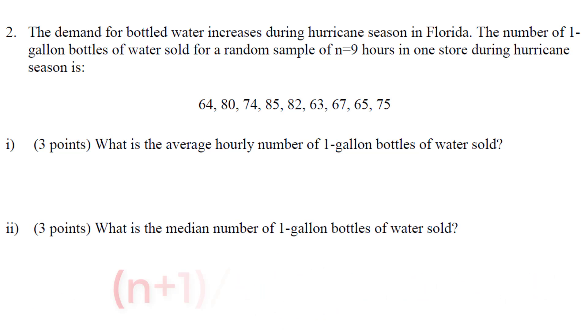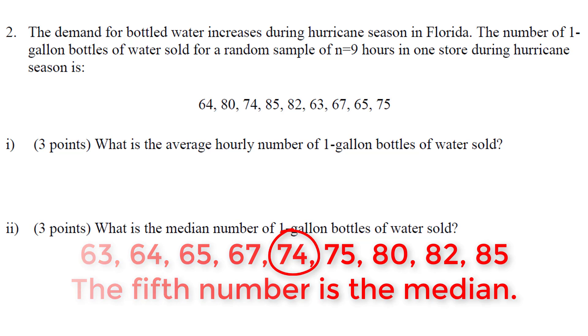You can also calculate the position of the median by taking the sample size of nine, adding one to it, and dividing by two. This formula just gets you the position of the median when the numbers are put in order.